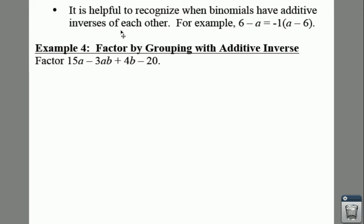Sometimes when you're factoring with four terms or more, it may help by using an additive inverse. An additive inverse is when you have something like 6 minus a. You can take a negative one out. If you factor out a negative one from each of these terms, you get negative one on the outside—this is your GCF. Then what you'd have left over is these terms basically just flip-flop, so you get a positive a and a negative six. This is called your additive inverse.